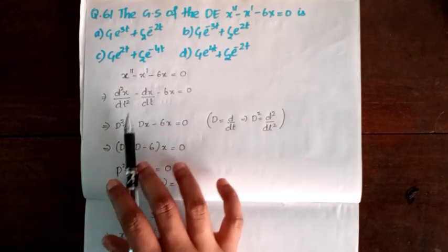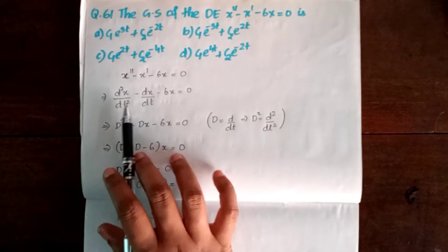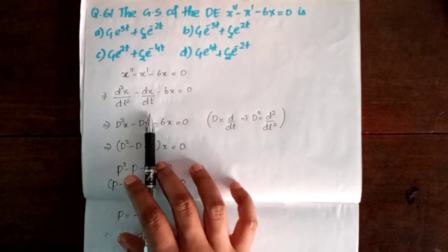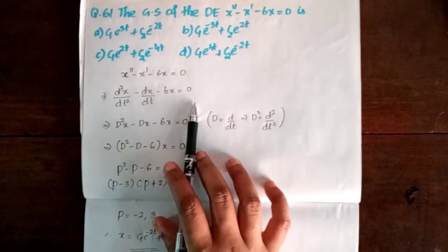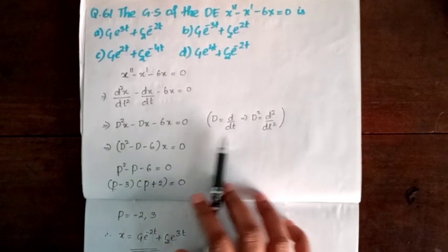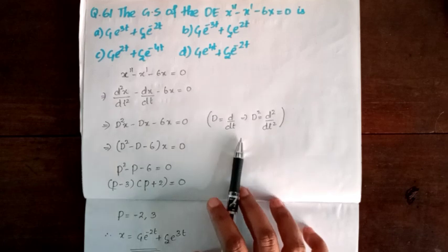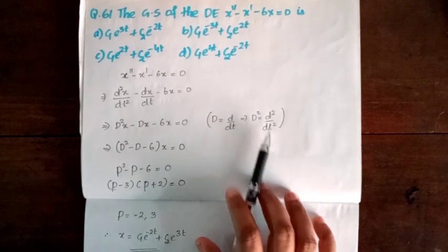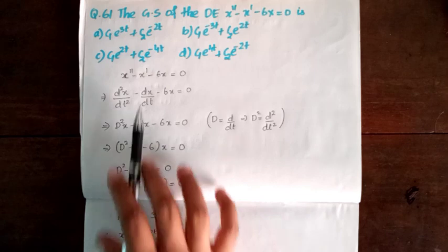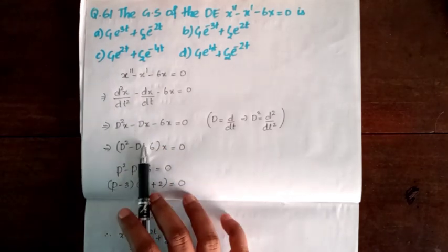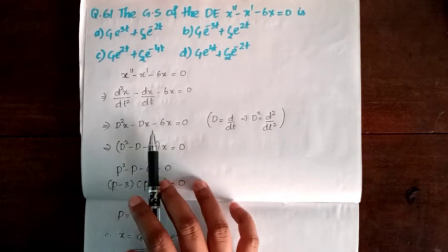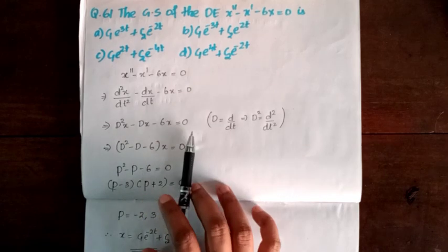We will write the equation as: d²x/dt² minus dx/dt minus 6x equal to 0. Now, let capital D equal to d/dt and D² equal to d²/dt². Substituting, we get D²x minus Dx minus 6x equal to 0.